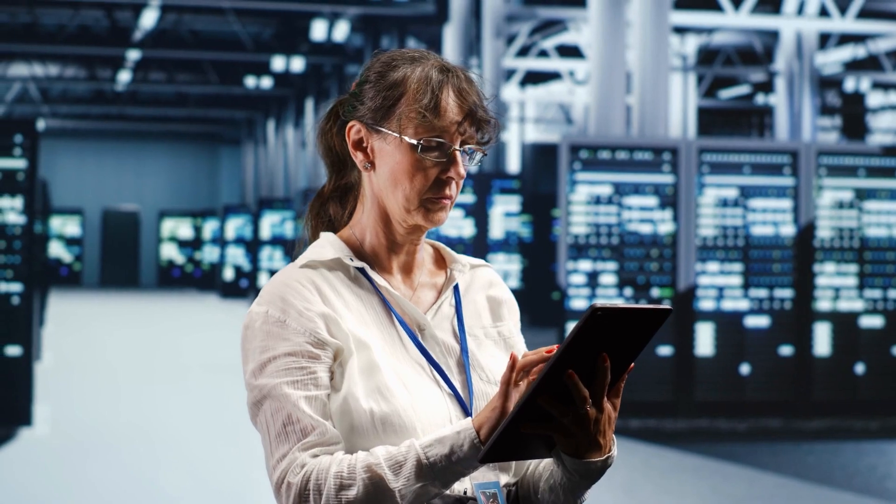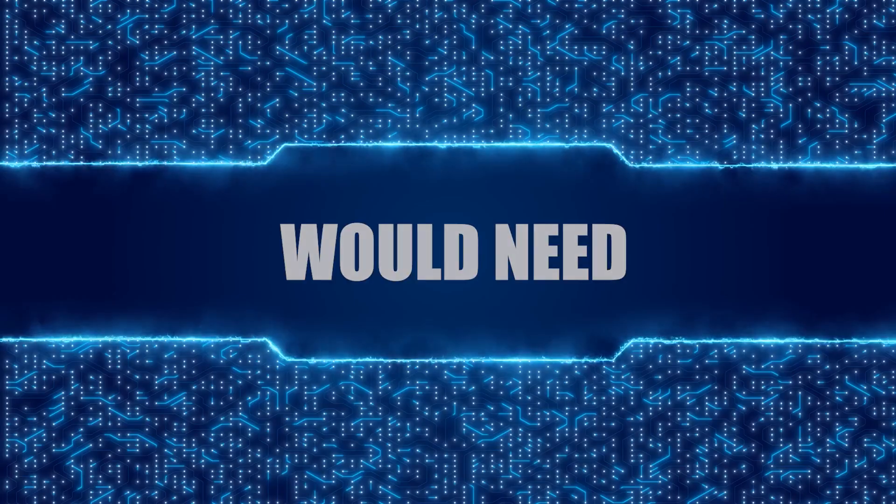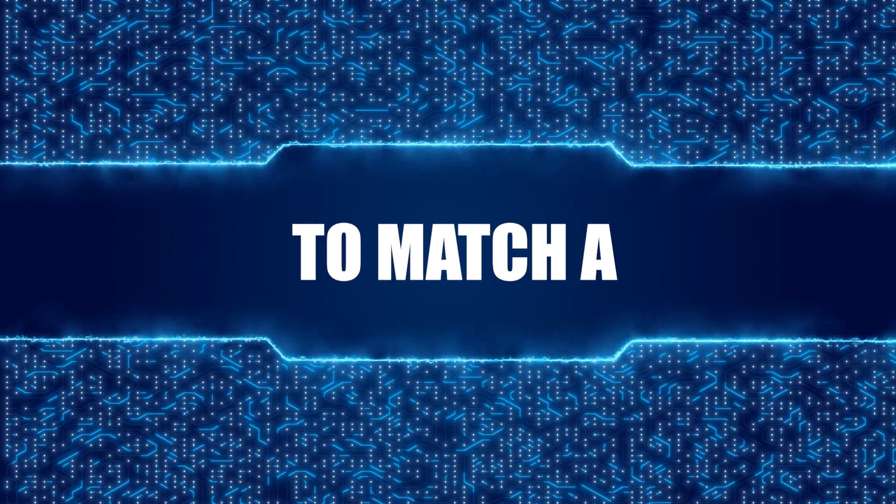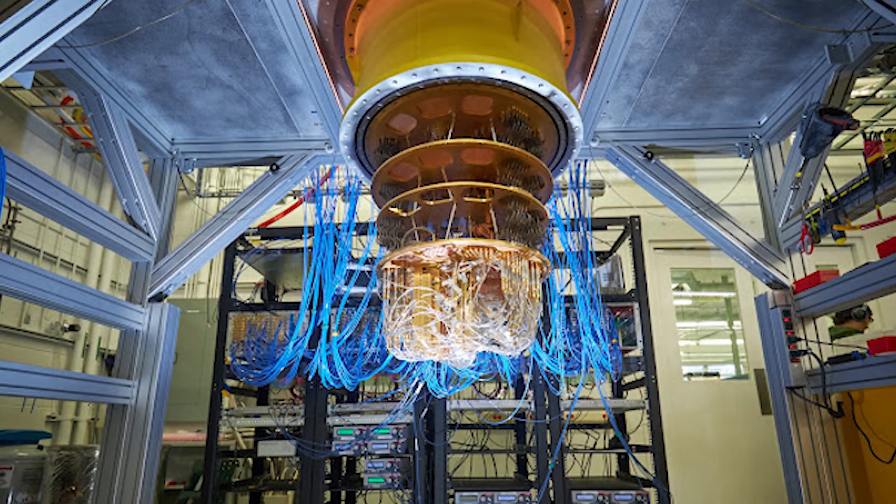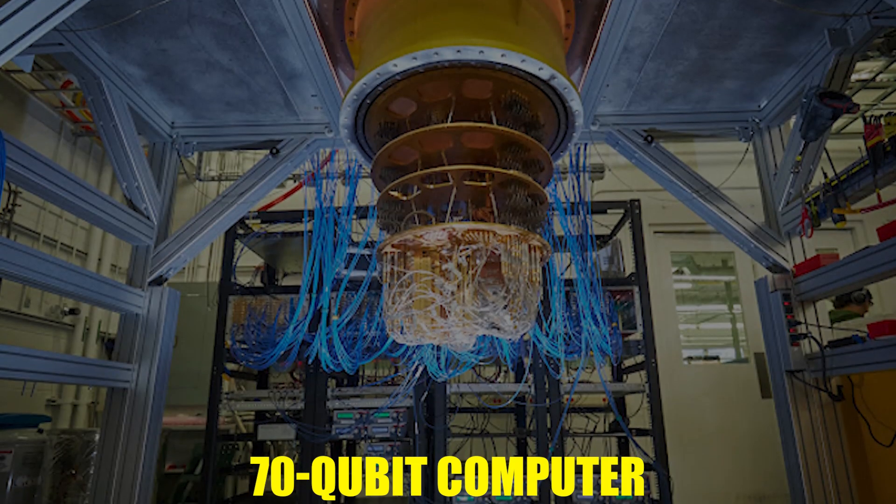Researchers said Frontier, the fastest computer in the world, would need 6.18 seconds to match a figure from Google's 53-qubit computer in 2019. On the other hand, it'd take 47.2 years to beat its most recent record of a 70-qubit computer.